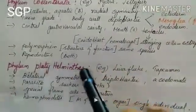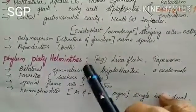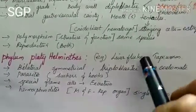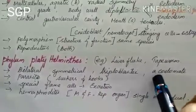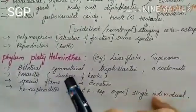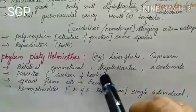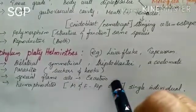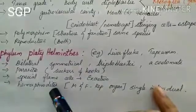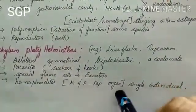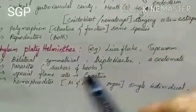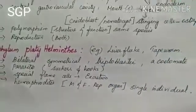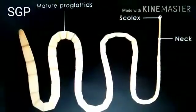The next phylum is Platyhelminthes, where flatworms are present. These organisms show bilateral symmetry and are triploblastic — three layers are present: ectoderm, endoderm, and mesoderm. They are acoelomate and parasitic in nature. Suckers and hooks help in parasitic mode of life. Special flame cells are used in excretion. The organism shows hermaphroditism — both male and female reproductive organs are present in the same individual. Examples include liver fluke and tapeworm.